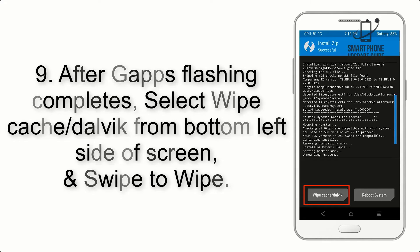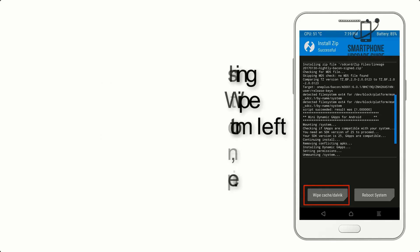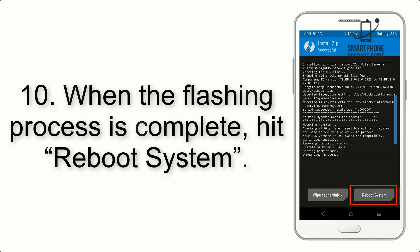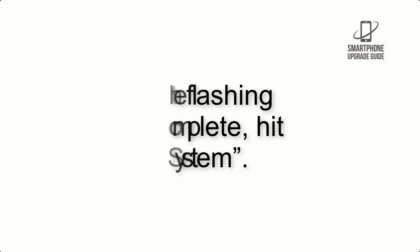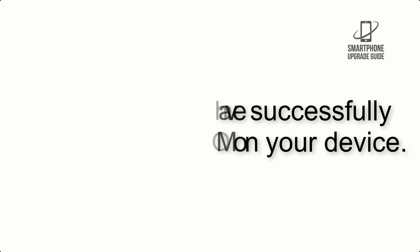Step 9: after G apps flashing completes, select Wipe Cache and Dalvik from the bottom left side of the screen and swipe to wipe. Step 10: when the flashing process is complete, hit Reboot System. That's it — you have successfully installed the ROM on your device.